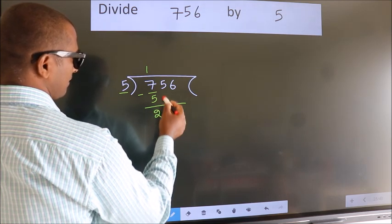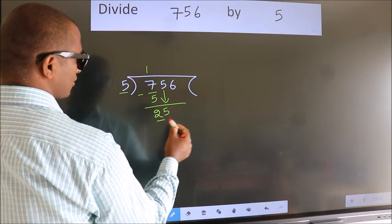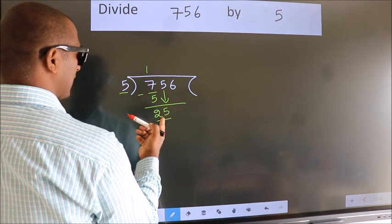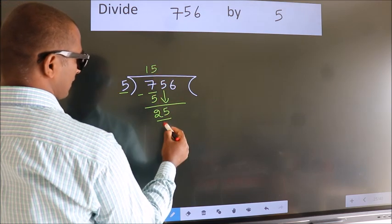After this, bring down the beside number. So, 5 down. So, 25. When do we get 25? In 5 table. 5 fives, 25.